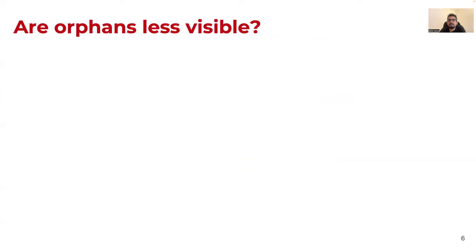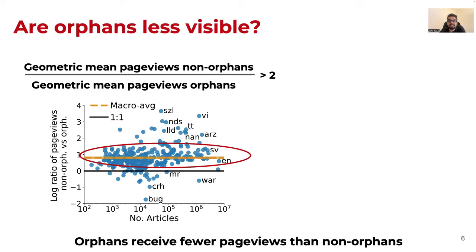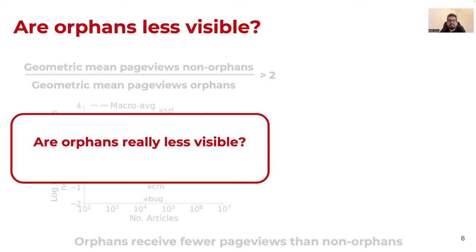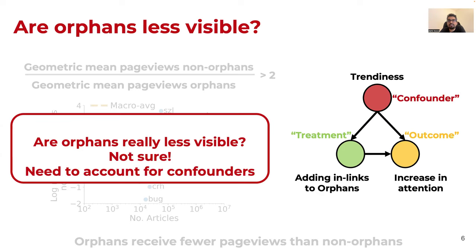A natural question that comes to mind here is, are orphans less visible? Comparing the page views of orphans with non-orphans, we actually find that non-orphans receive more than twice the number of page views when compared to the pages received by orphans. And this is consistently seen across different language versions of Wikipedia. But let me take a step back here. Are orphan articles really less visible? Or let me rephrase this. Does adding in-links to orphans really cause the articles to receive more page views? One cannot be sure because there could be many confounding factors such as article popularity, topics, and more.